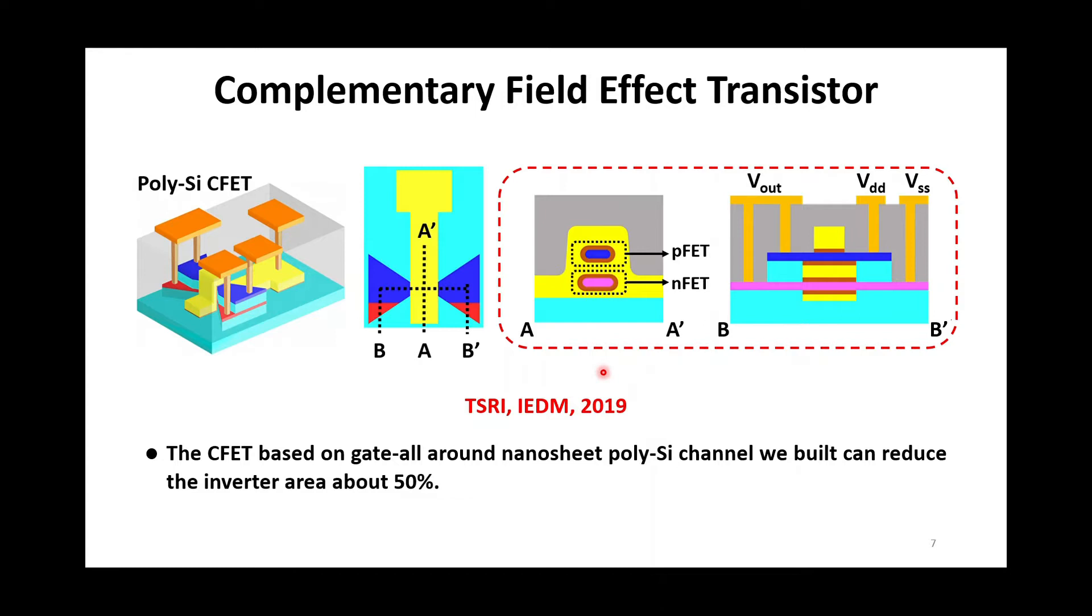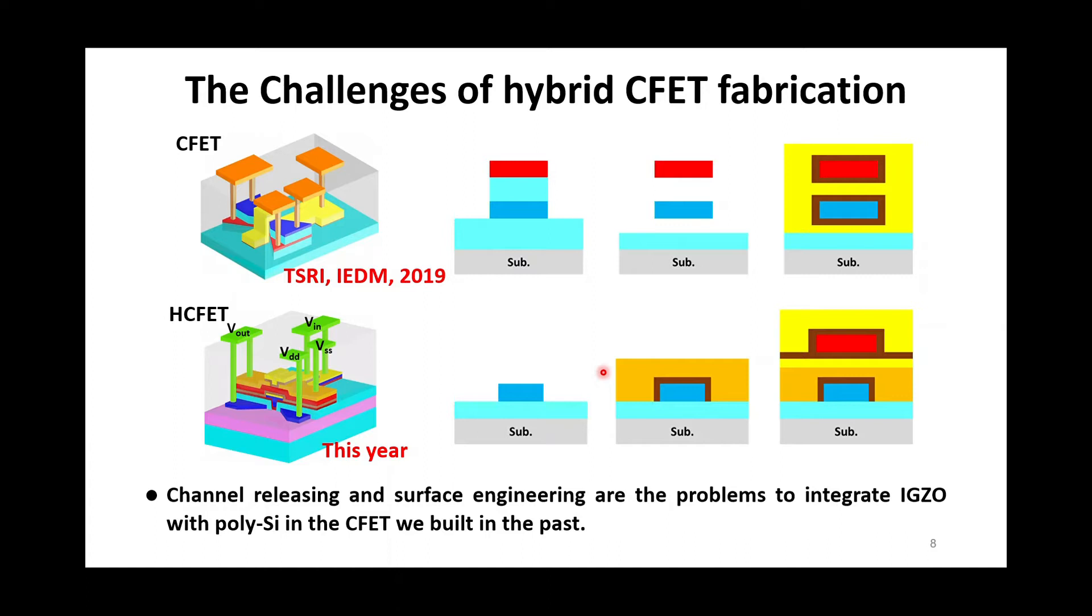However, there are two main problems when we build stacked hybrid CFET. First, we release stacked poly-silicon channel by dipping hydrofluoric acid because of its high etch selectivity between silicon and silicon oxide. But hydrofluoric acid can etch IGZO as well, so silicon oxide cannot be the sacrificial layer beneath IGZO.